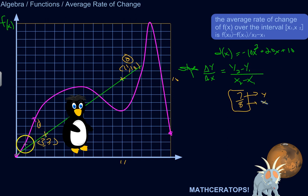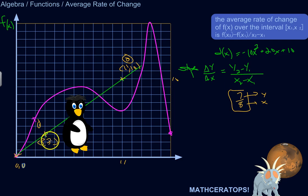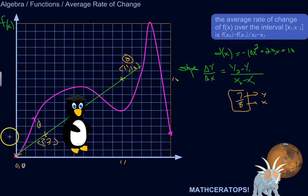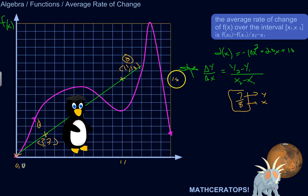And that slope is going to be constant. No matter where you are on the line, you're going to get the same slope. You could pick any two points on a straight line and you'll get that slope of 7/8, if that's what the slope of the line is. So there's a constant rate of change, which we call slope.